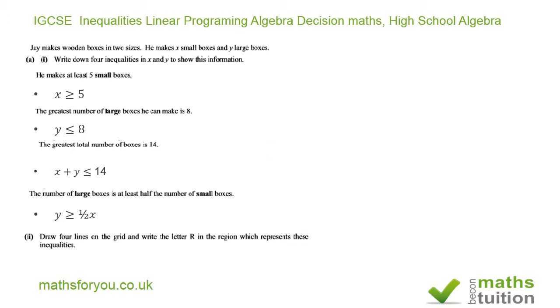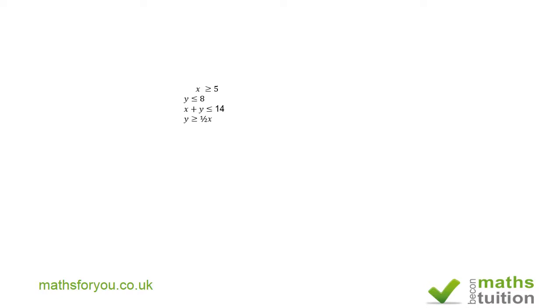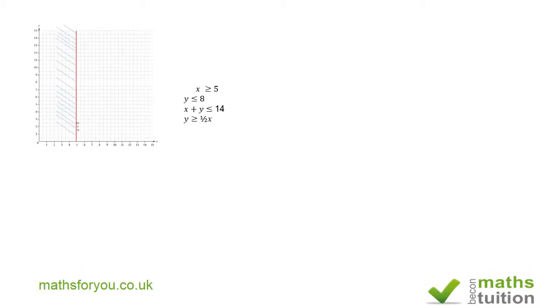We're now going to draw a graph to illustrate these four inequalities. We first of all draw the graph of x = 5. In this graph, this is the line x = 5. On the left-hand side of this graph, the left-hand side is not valid because the x values are less than five — four, three, two, one, zero — so that's not valid there.